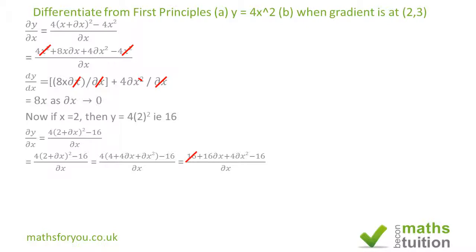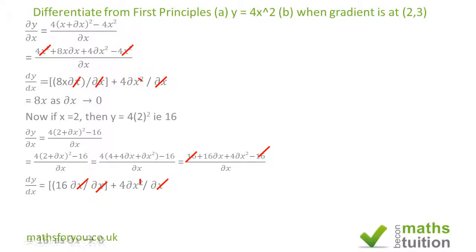The sixteens cancel out, leaving us with 16 Delta X plus 4 Delta X squared, divided by Delta X. Canceling gives us 16 for the first term and 4 Delta X for the second term. Since 4 Delta X is so small we can ignore it, our answer becomes 16 as Delta X tends to 0.